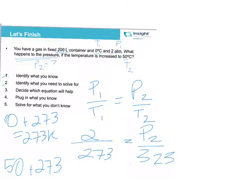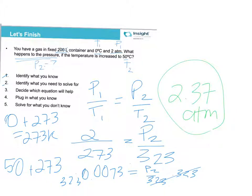So let me simplify a little bit. This is 0.0073 equal to P2 over 323 and multiply both sides by 323 and I will get 2.37 atmospheres. So this is probably the most complicated the problems get. Some of them, many of them, will give you the temperatures directly in Kelvin but if they don't, just remember, you do need to convert those to Kelvin.